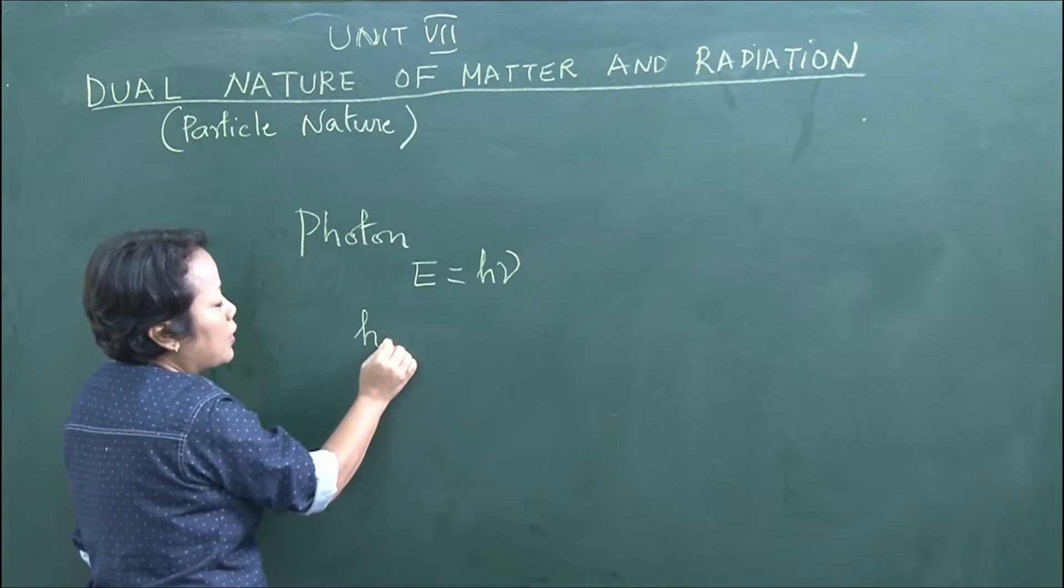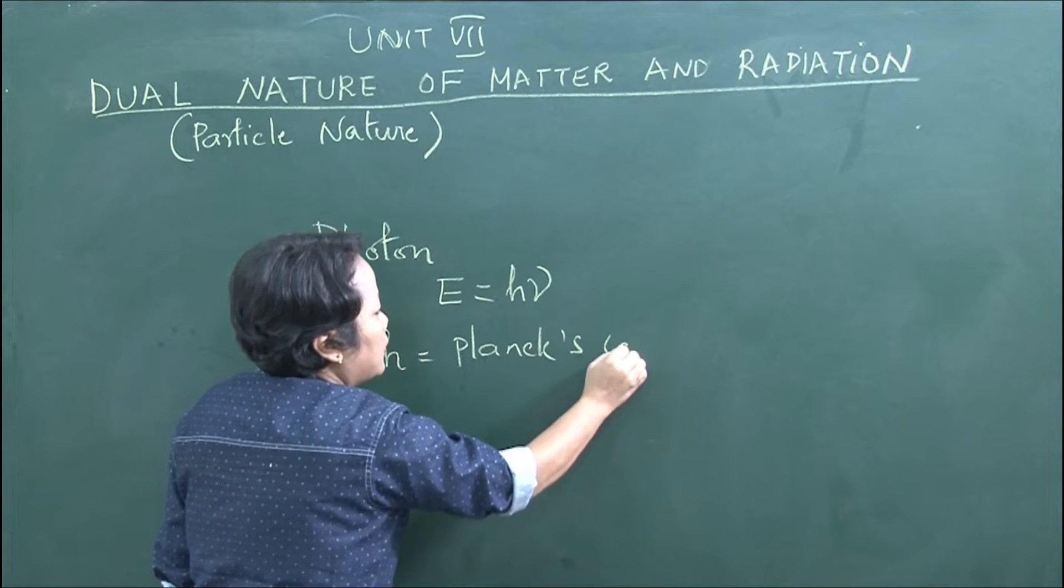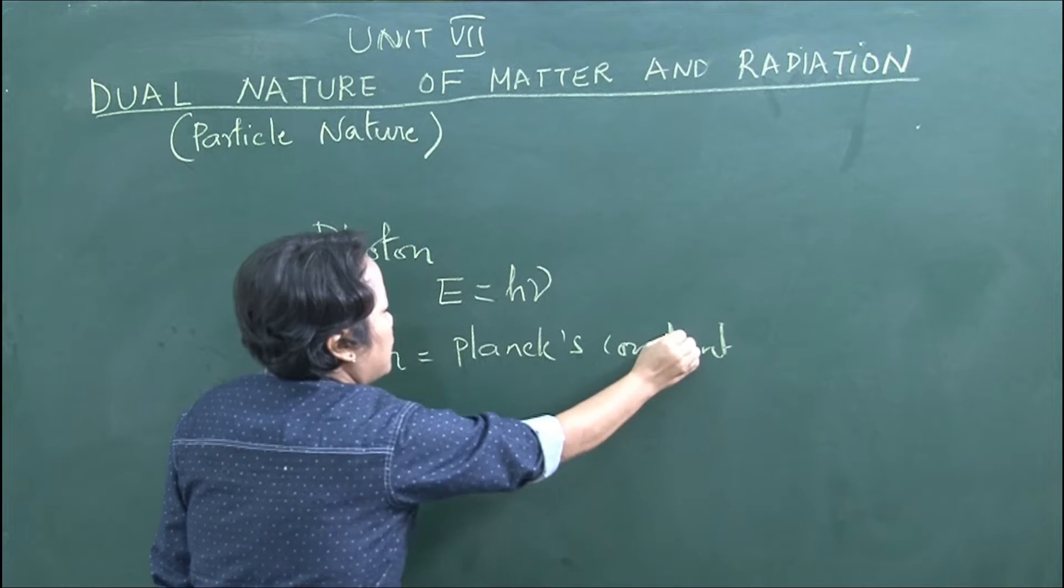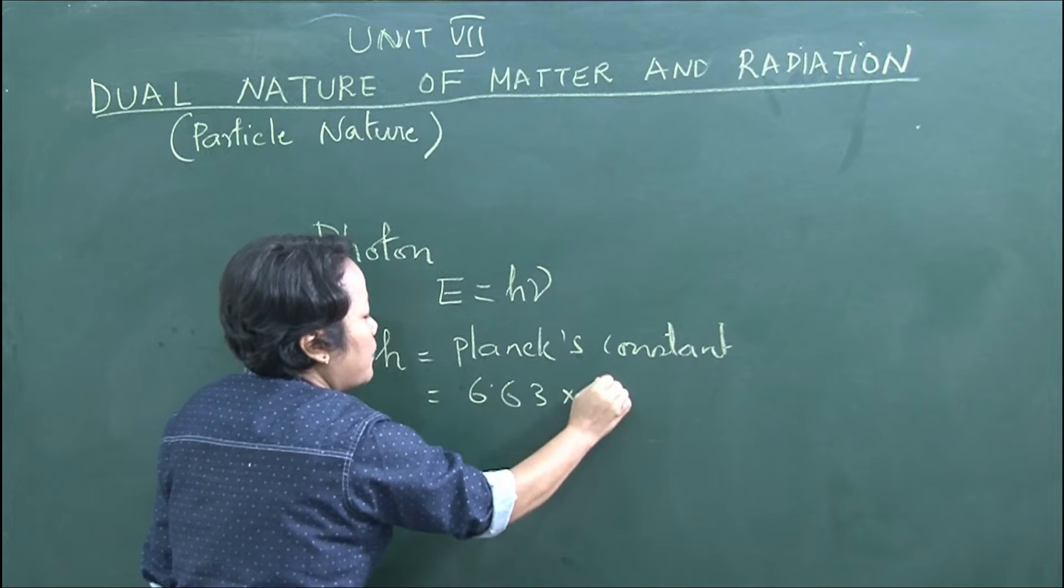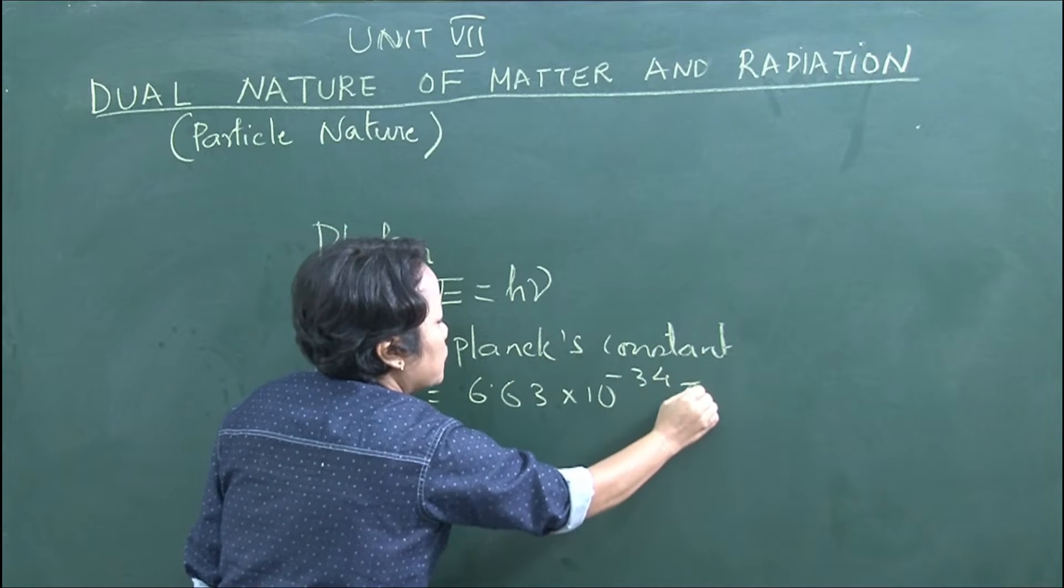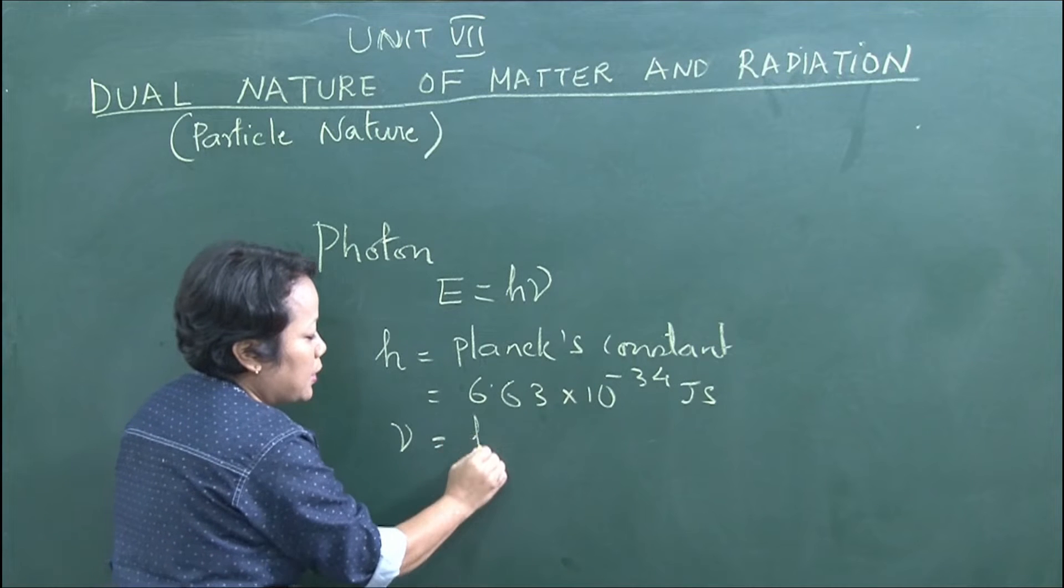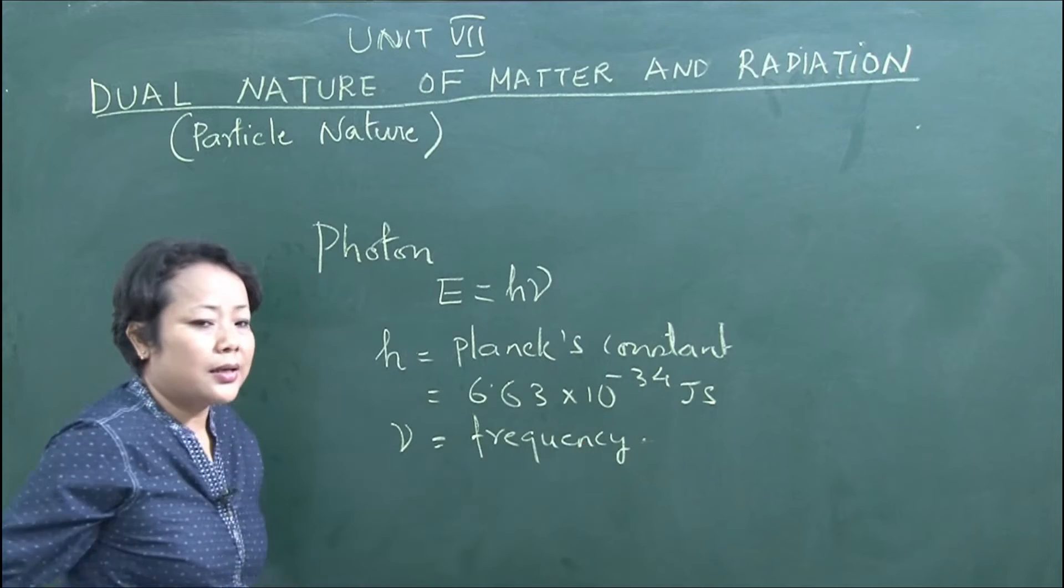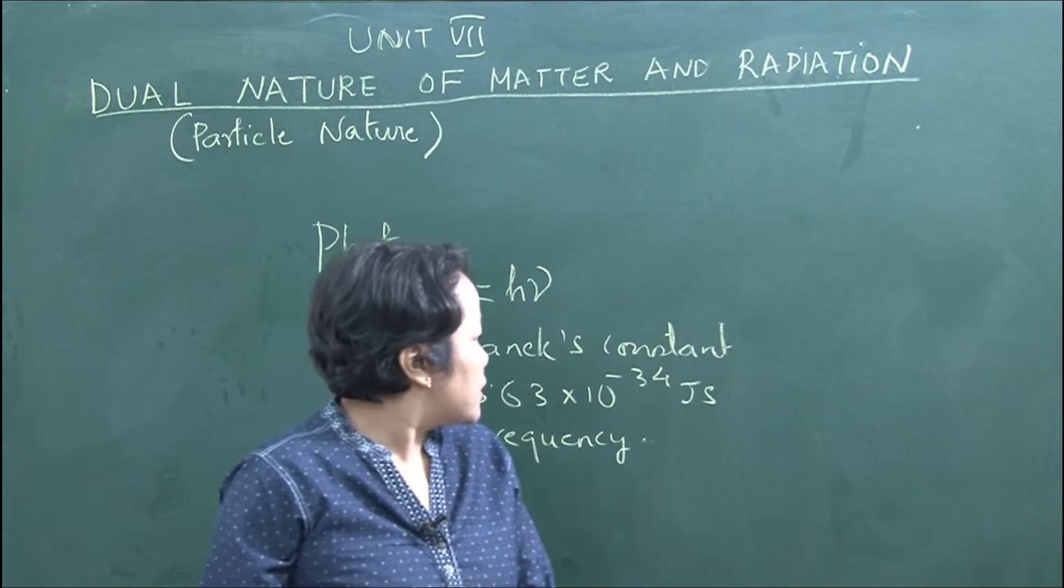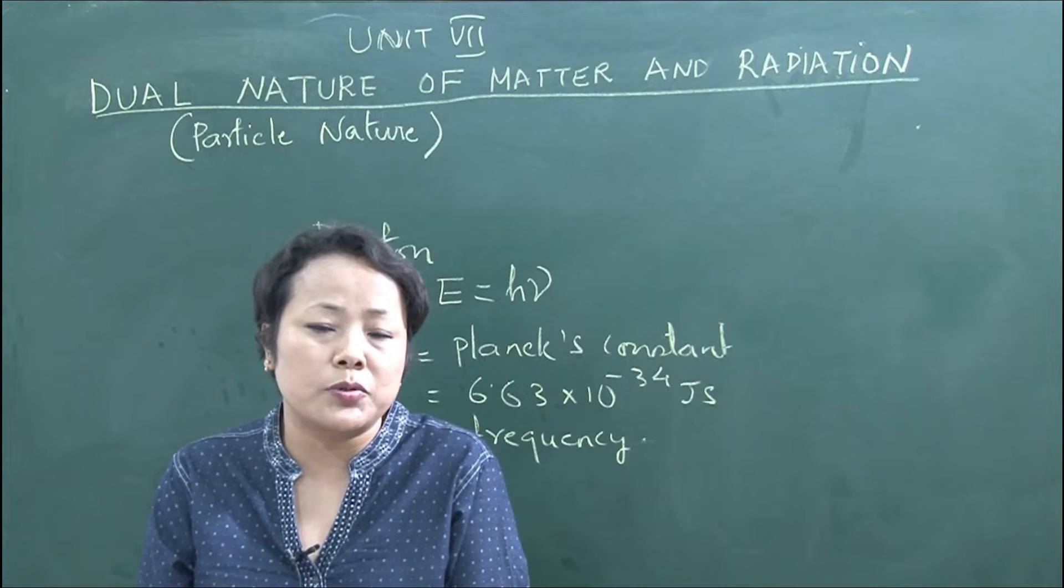H is the Planck constant, with a value of 6.63 times 10 to the power minus 34 joule seconds. Nu is the frequency of the light.